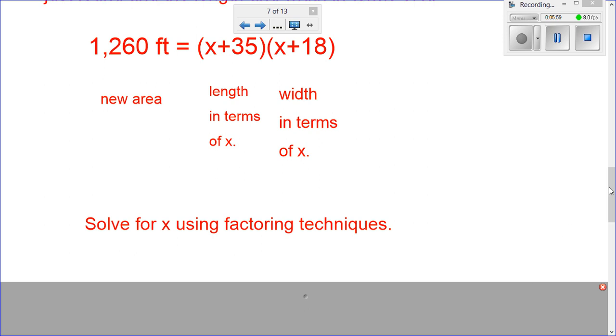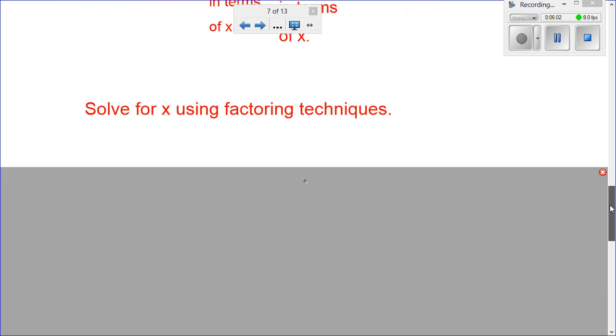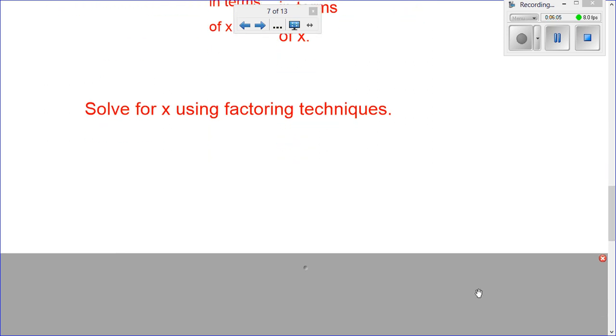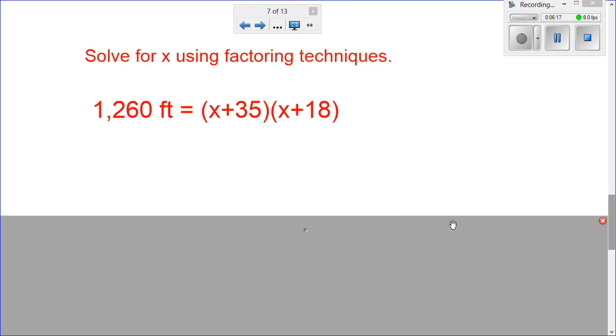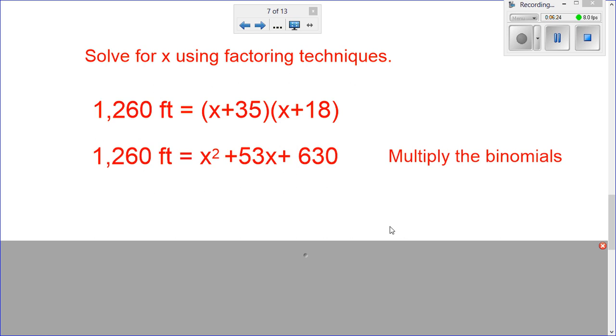Okay, so now we're going to solve using factoring techniques. So, let's take a look at this. Again, if I'm moving too fast, remember you can pause and rewind and get caught back up. Okay, so if we take our formula, the first thing we have to do is multiply the two binomials. And multiplying two binomials, we get x squared plus 53x plus 630.